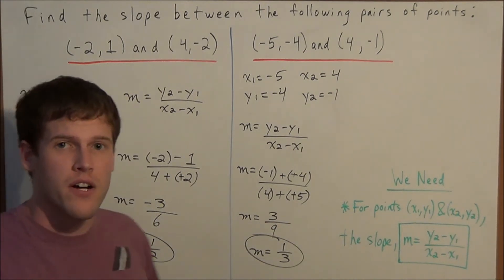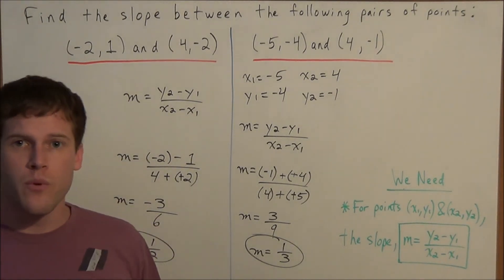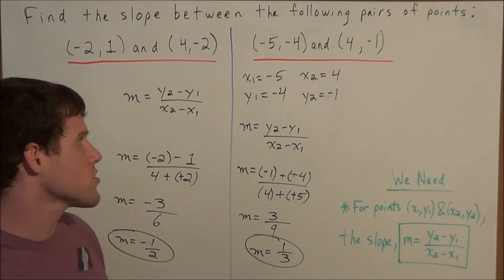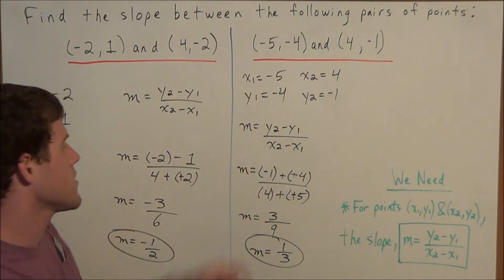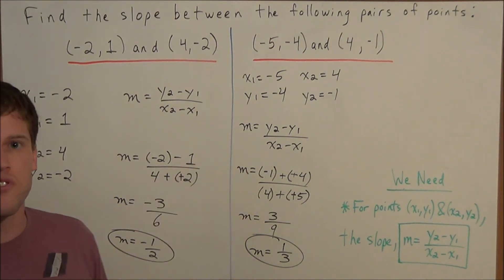So when you're first learning how to find the slope between two points, I do recommend writing all the steps out, x1, y1, x2, y2, but as you develop fluidity with this technique, you will just be able to look at the points and set up this step here for whatever pair of points you find the slope between.